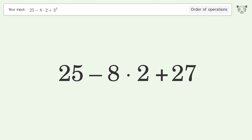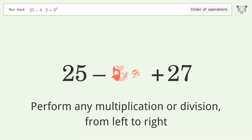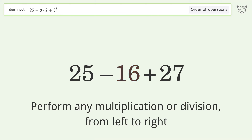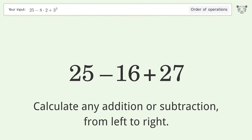First, simplify exponents and square roots: 3 to the power of 3 equals 27. Then perform any multiplication or division from left to right: 8 times 2 equals 16.